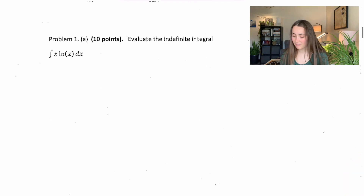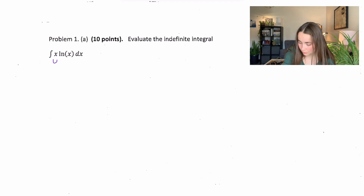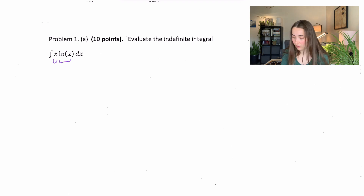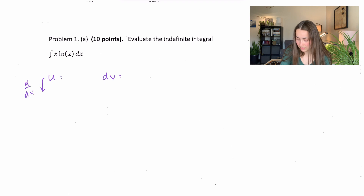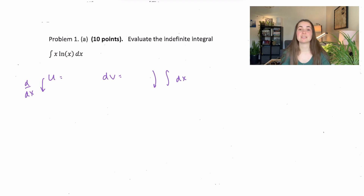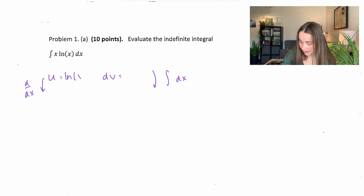We're doing number one: the integral of x times the natural log of x dx. Notice here we have two functions. When we have two functions of our variable, we're going to use integration by parts. We'll have u equal to something and dv equal to something. We differentiate u and integrate dv. I know how to take the derivative of ln(x) and integrate x.